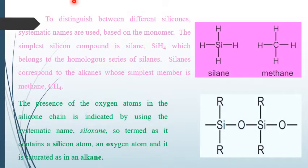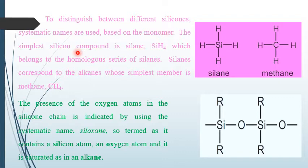To distinguish between different silicones, systematic names are used based on the monomer. The simplest silicone compound is silane (SiH₄), where one silicon atom is bonded with four hydrogen atoms, which belongs to the homologous series of silanes.